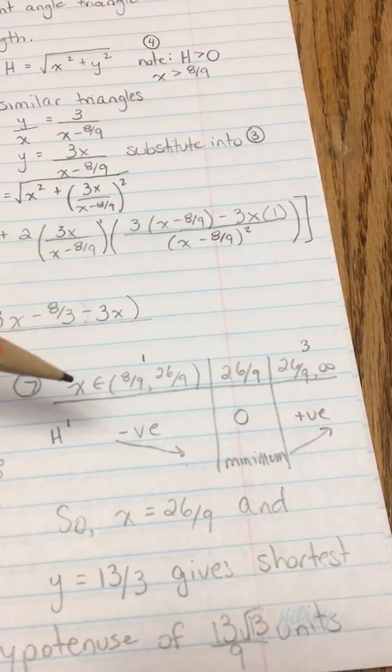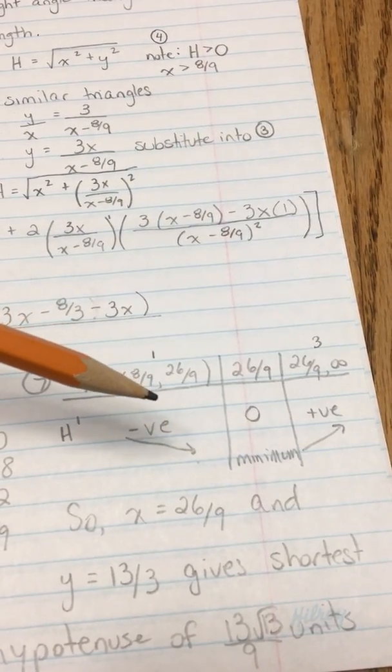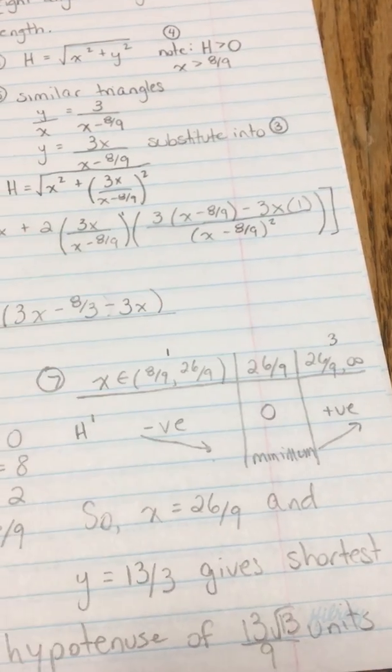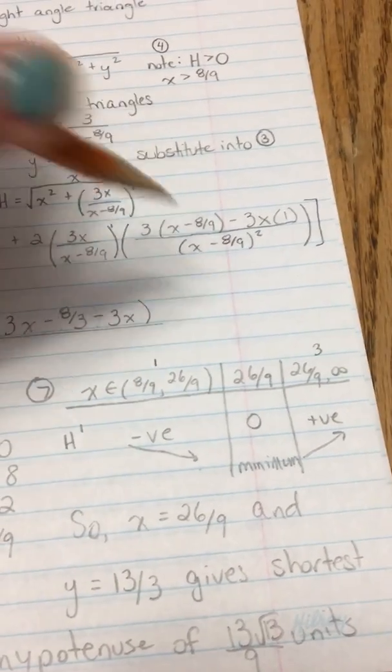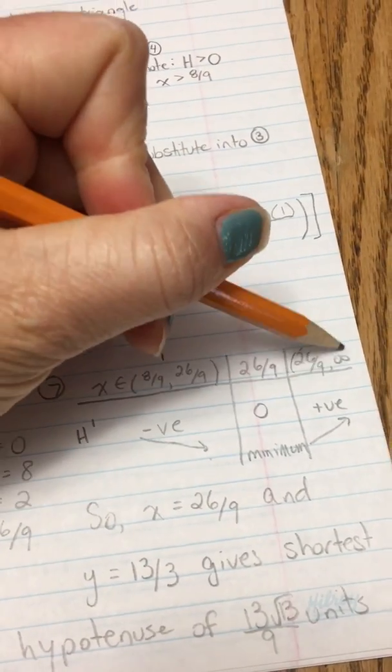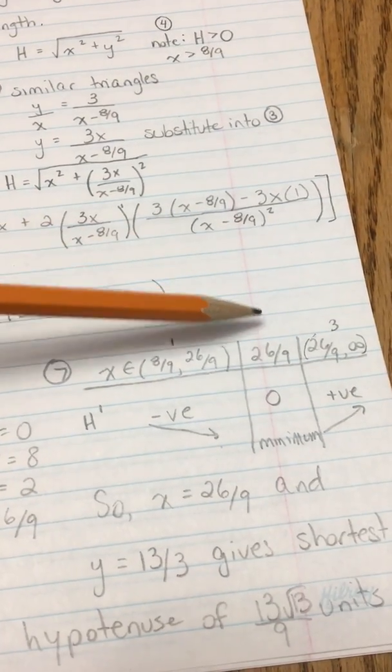We're going to use our equation. We know that x has to be greater than 8/9 but we're not sure how much smaller than infinity it has to be, so we're going to let that go all the way to infinity and we're going to check 26/9.